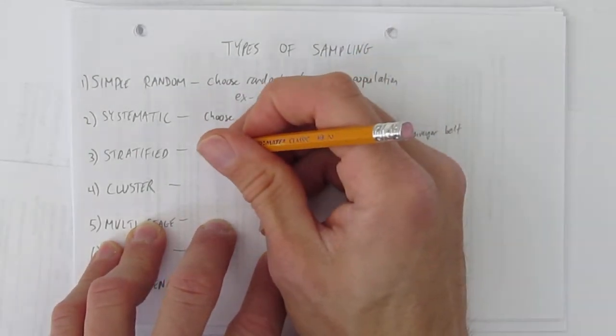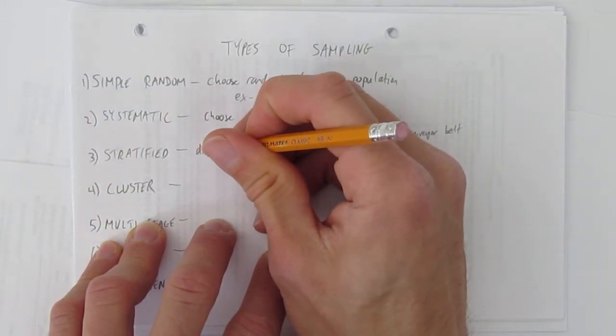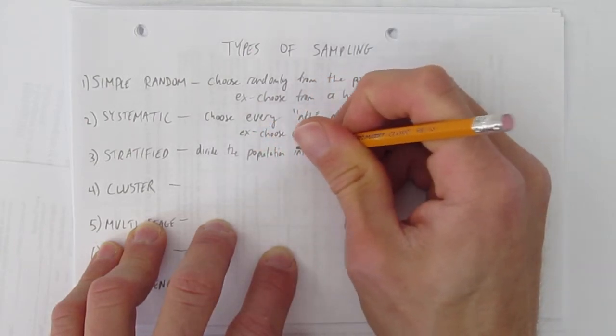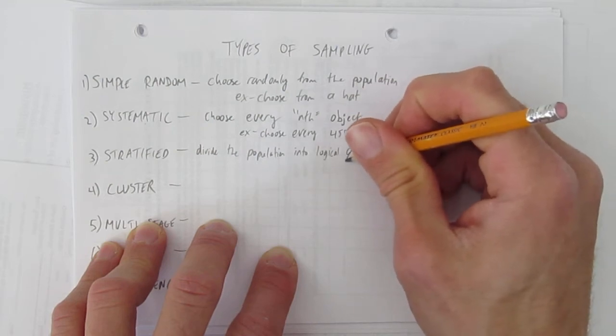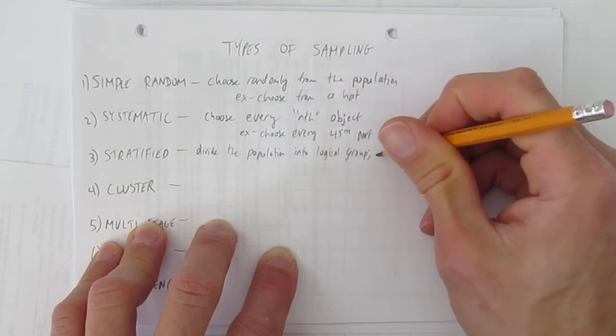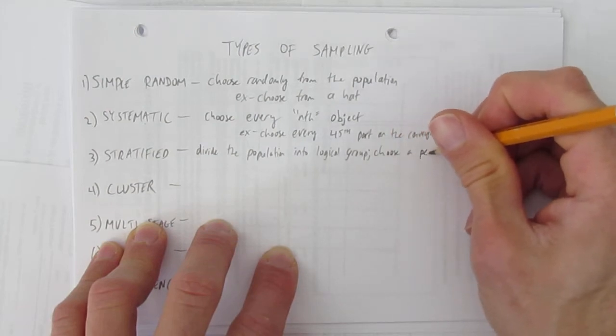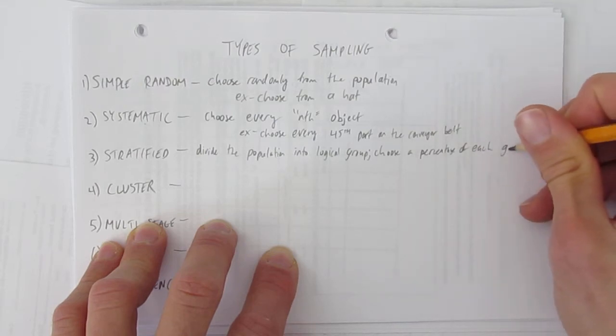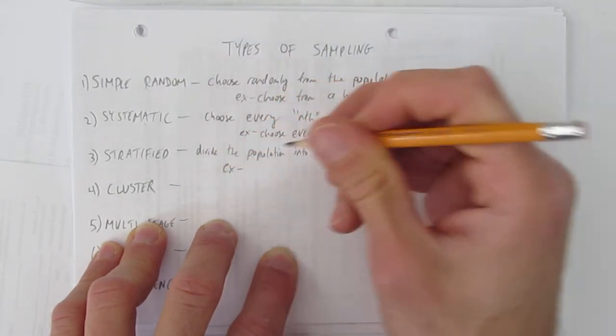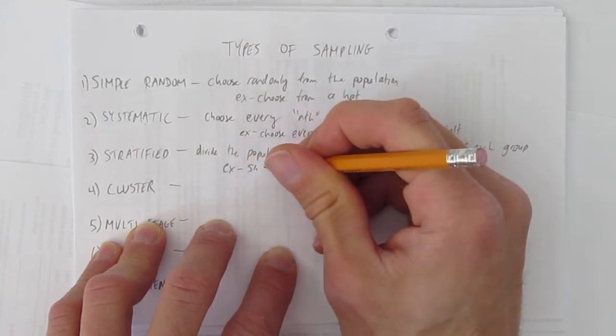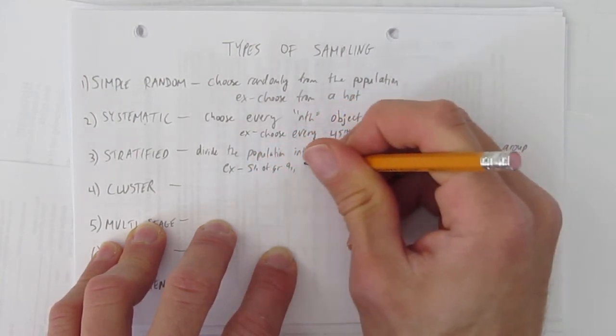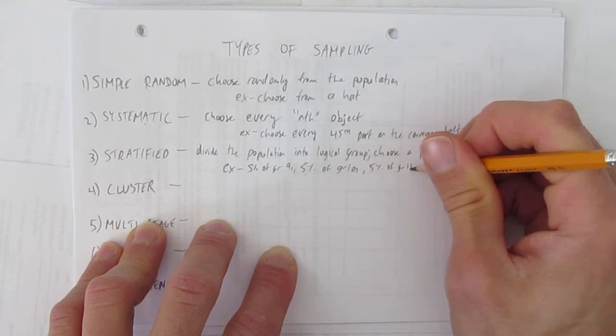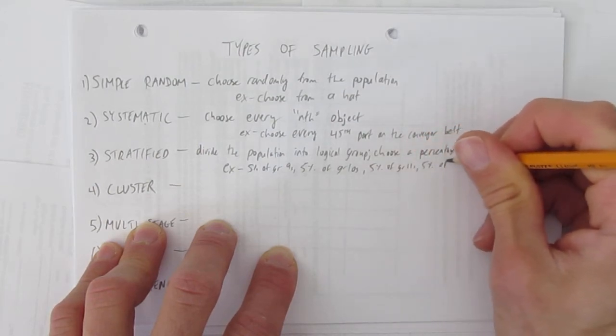A stratified sample is where you divide the population into logical groups and then choose a percentage of each group. The most obvious example if you're a high school student is doing something like pick five percent of the grade nines, five percent of the grade tens, five percent of the grade elevens, and five percent of the grade twelves.